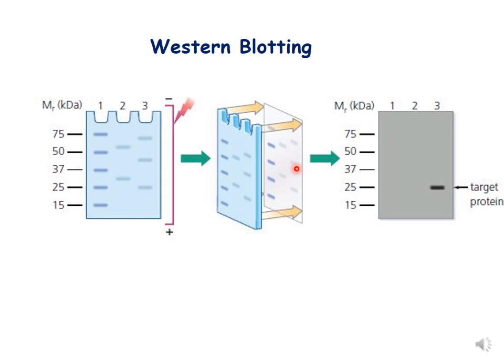The membrane can be PVDF or nitrocellulose, and the transfer method can be electro blotting or via capillary action. After this, the membrane is processed and an autoradiogram is developed. If the bands of the protein being checked are present, they give a signal. This band on the autoradiogram is an example representing Western blotting and visualization of the target protein.